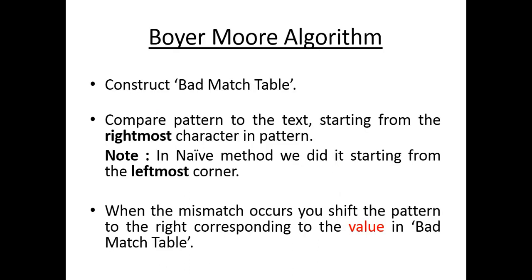Before starting with the Boyer-Moore method, you have to remember some key points. First, create a bad match table. Then compare the pattern to the text starting from the rightmost character in the pattern — in the Naive method we did it from the leftmost corner, but here we start from the rightmost corner. Finally, when a mismatch occurs, you shift the pattern to the right corresponding to the value in the bad match table.